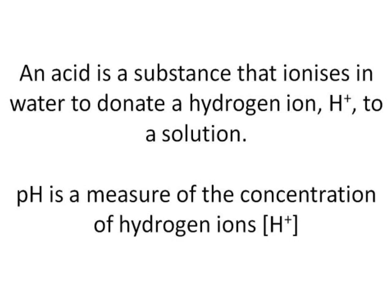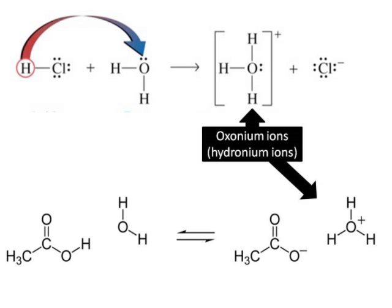Here are a couple of diagrams to represent ionization. Top diagram is hydrochloric acid and the H+ that is donated combines with a water molecule. There is a dative bond formed between the oxygen and the H+ and that forms a hydronium ion. In your textbook you refer to this as an oxonium ion. An oxonium ion is actually any oxygen atom that forms a dative bond in this way within a molecule.